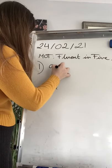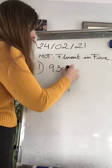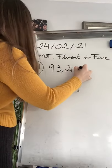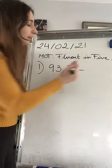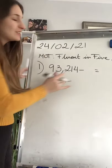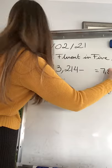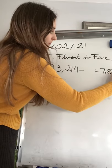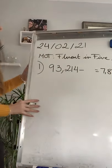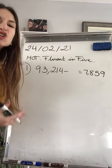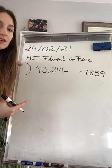I'm just going to go for the first one. 93,214 take away something equals 7,859. It is a missing number, see what you think that it will be.